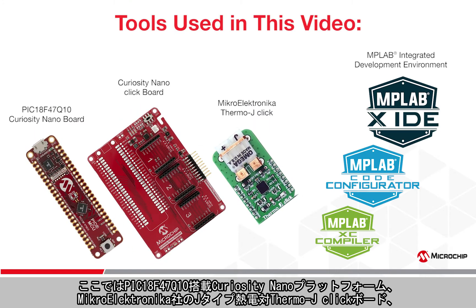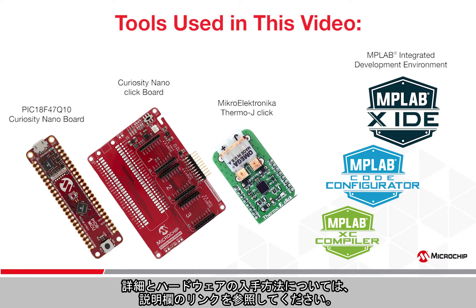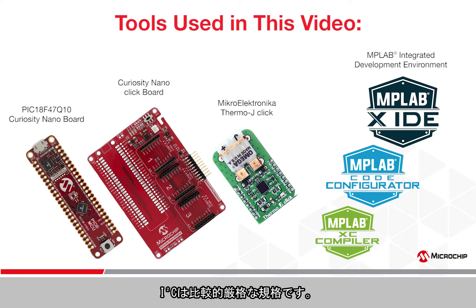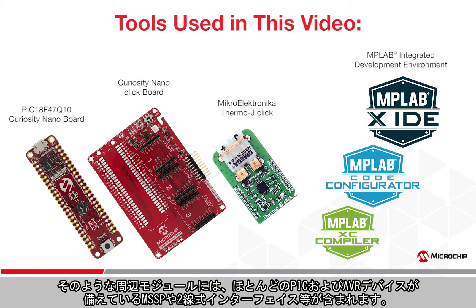I'll be using the Curiosity Nano platform with the PIC18F47Q10, the Thermo J Click board from MikroElektronika, a basic J-type temperature probe, and the Curiosity Nano Baseboard for Clicks. See the links in the description for more info if you want the hardware yourself. I2C is a relatively strict standard, so this example should be applicable to any PIC or AVR device with a peripheral that supports I2C, including peripherals like the Master Synchronous Serial Port and the Two Wire Interface.